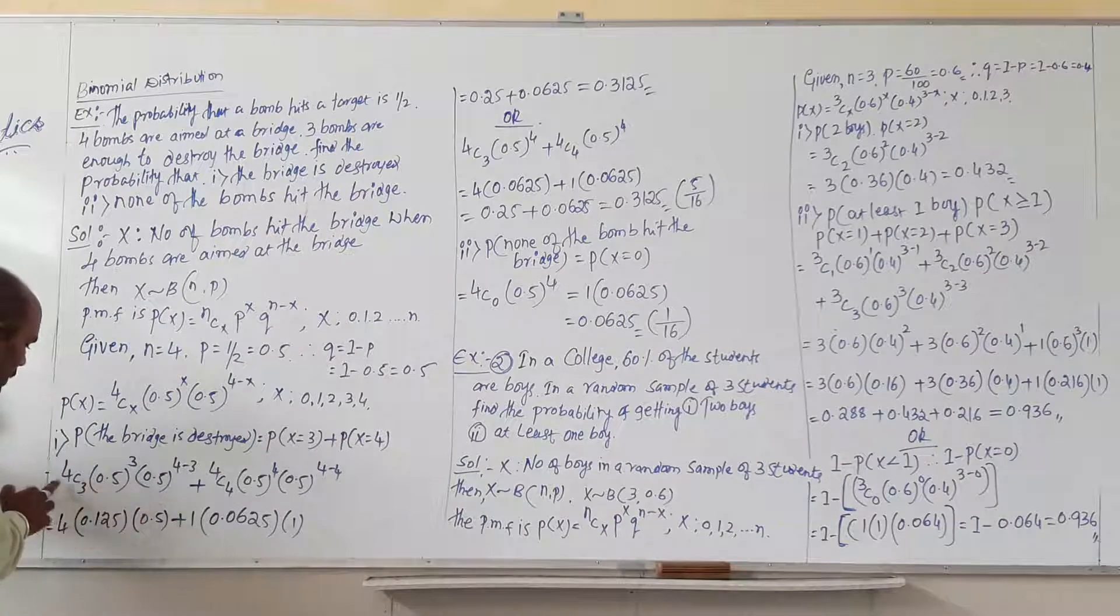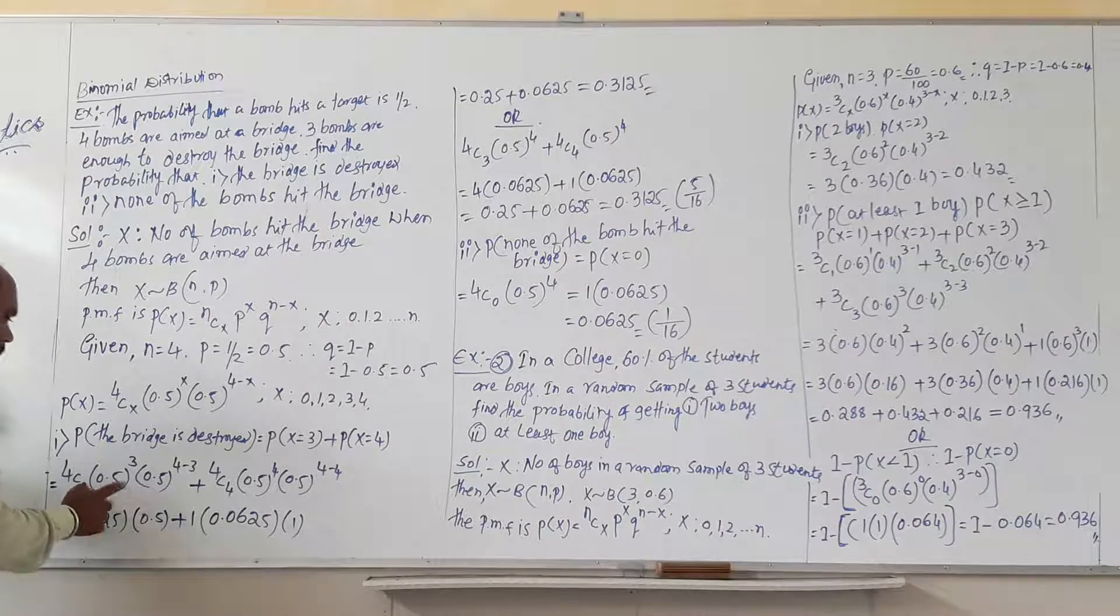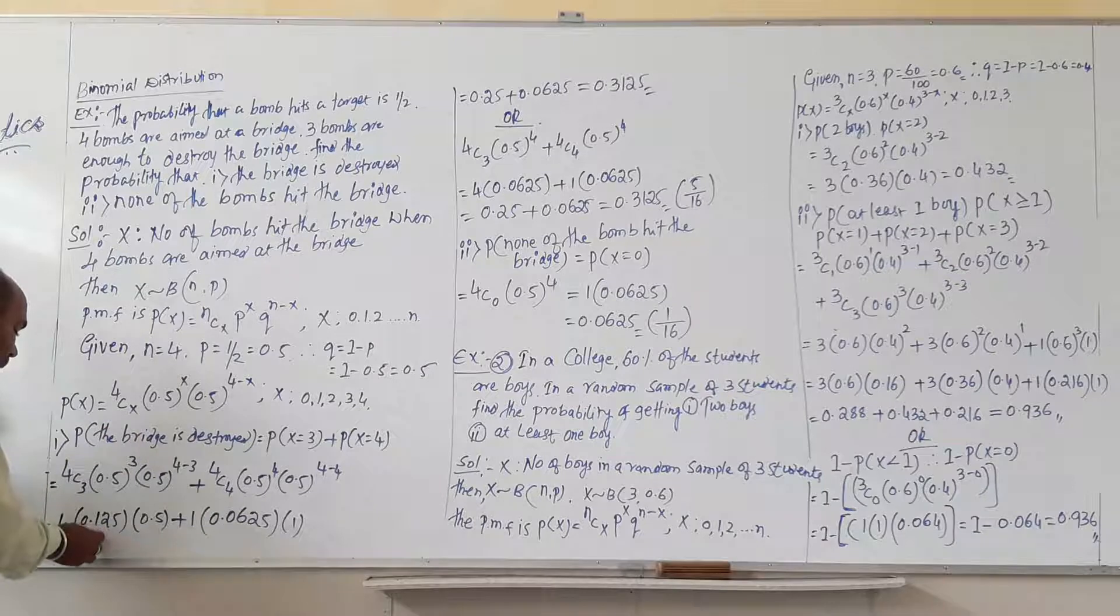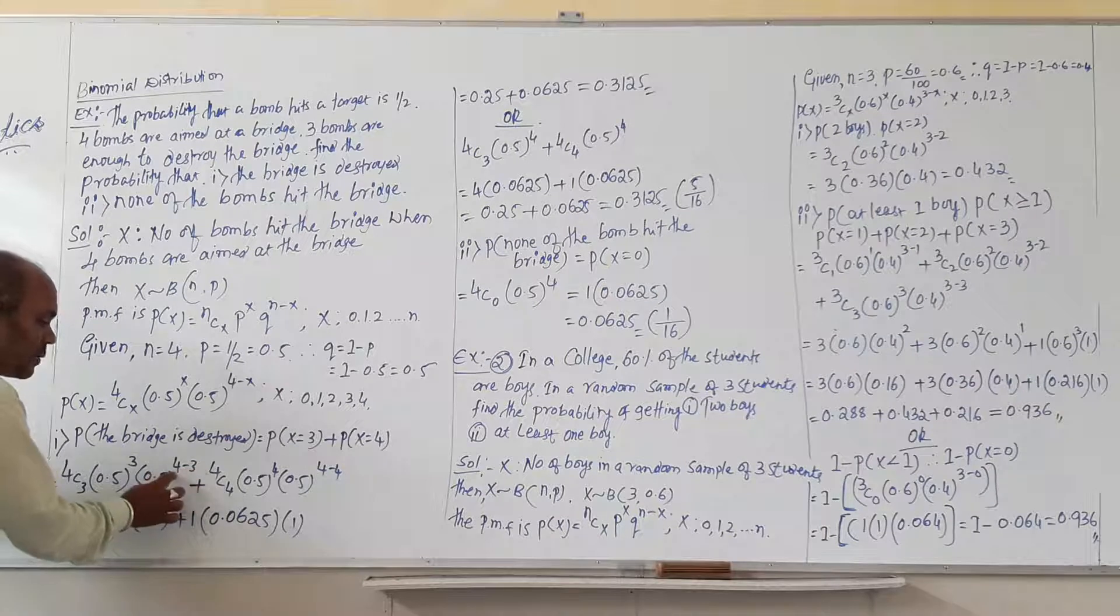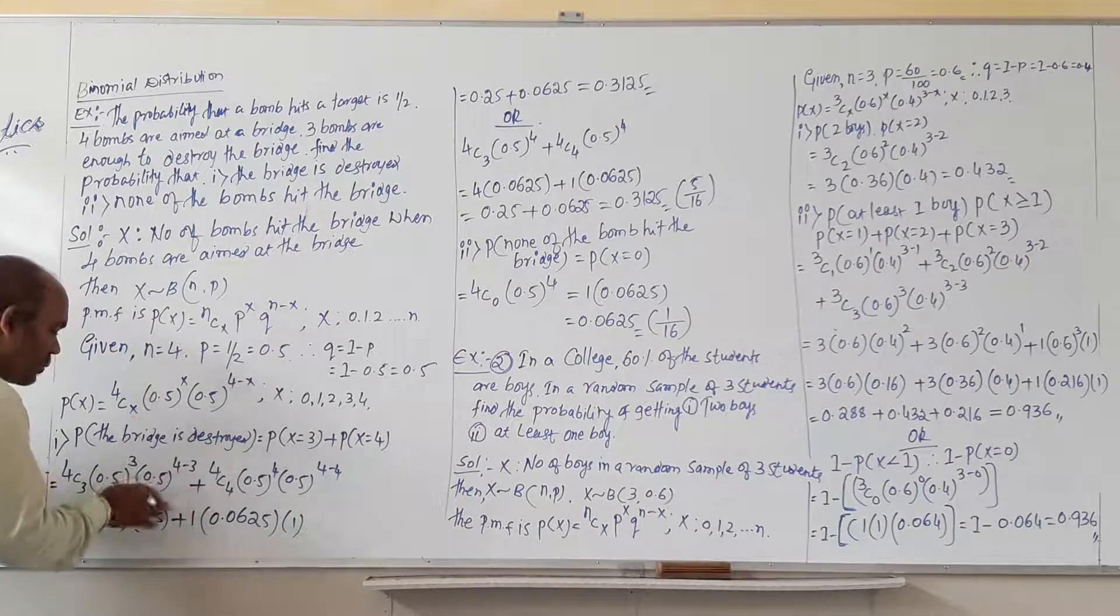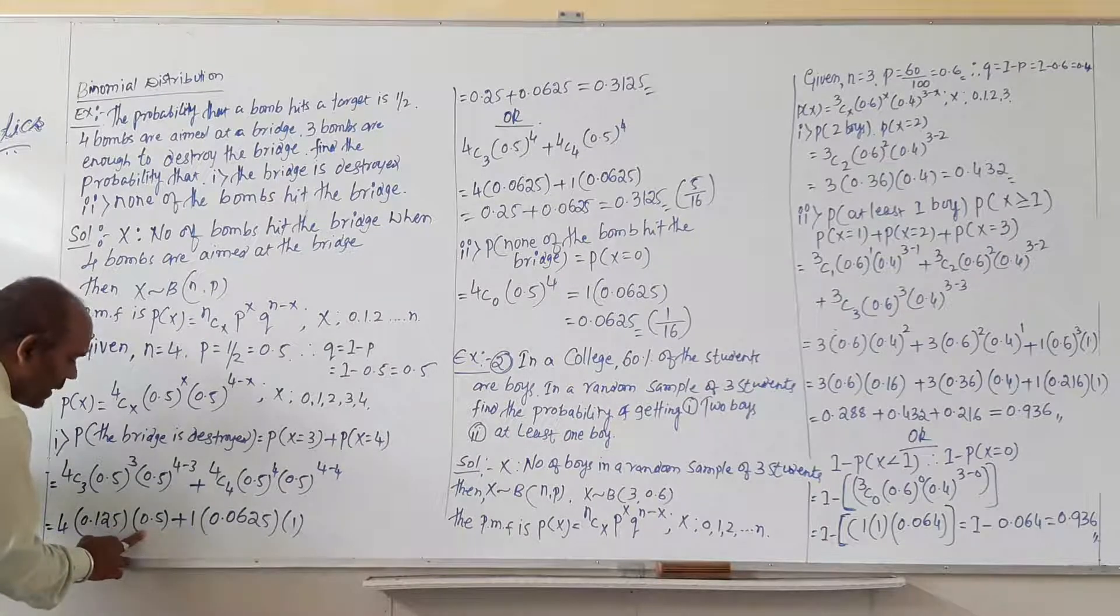After simplifying this, 4C3 you will get the value 4. Then 0.5, you have to multiply 0.5 three times, then you will get 0.125. Then 0.5. Here 4 minus 3 is there, so 4 minus 3, 1, so 0.5 into 1 means you will get the same answer, 0.5.